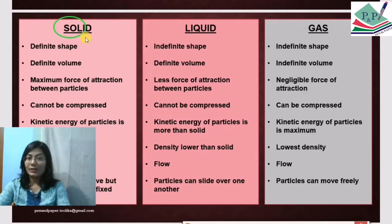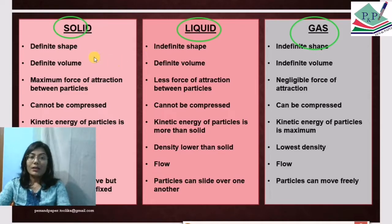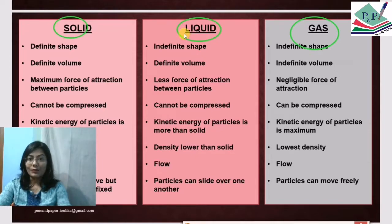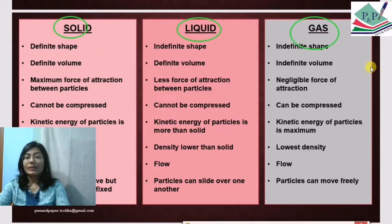There are three states of matter: solid, liquid, and gas. Now we are going to look at the differences between these three states. You have seen solid — like a table or chair. You have seen liquid — things that flow, like water and oil. And gas, which is not visible but we can feel it. We will now understand the differences between them.